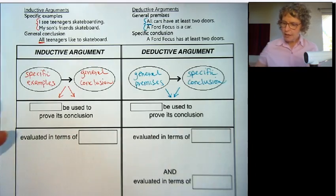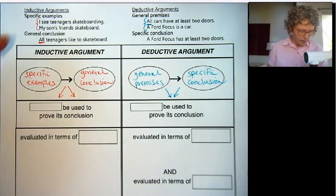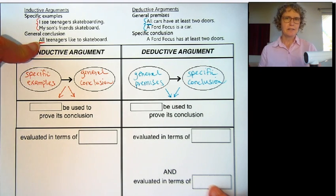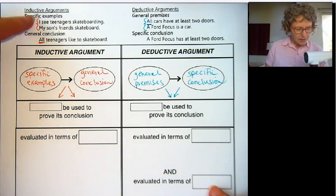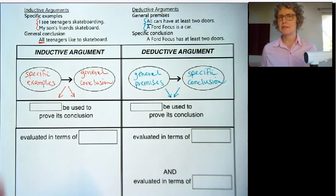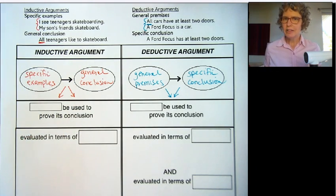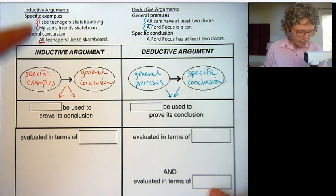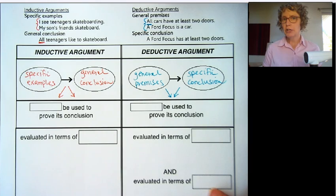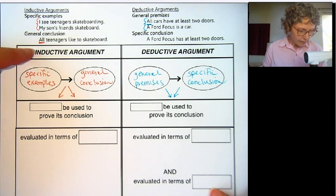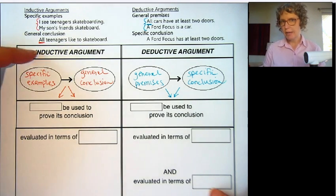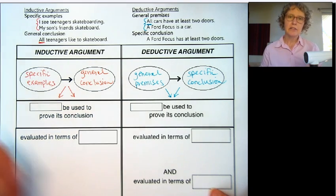You have to be careful though. In this example, we are overgeneralizing. Looking at a couple of specific examples, can we conclude that all teenagers like to skateboard? No, we really can't. That's the danger — that's what we want to avoid doing ourselves and look for in other arguments: is someone overgeneralizing or stereotyping in an inductive argument?